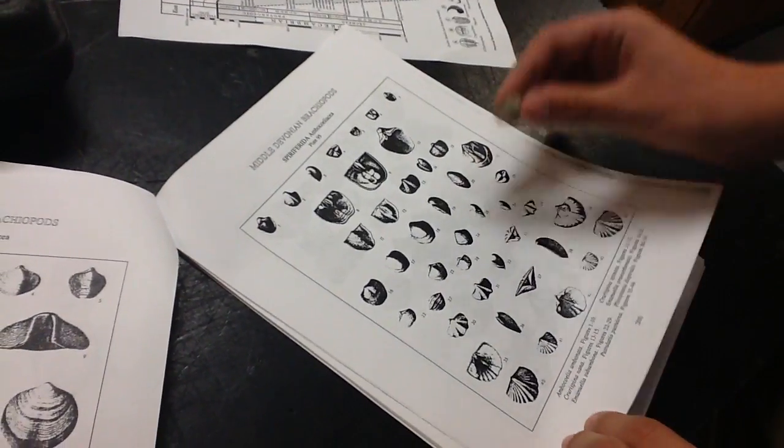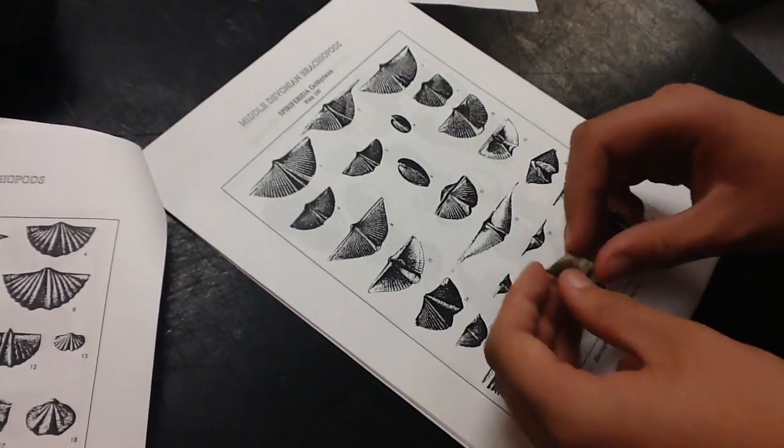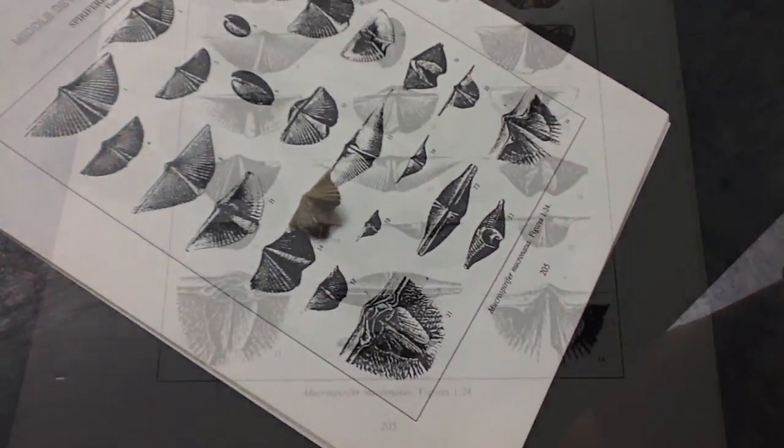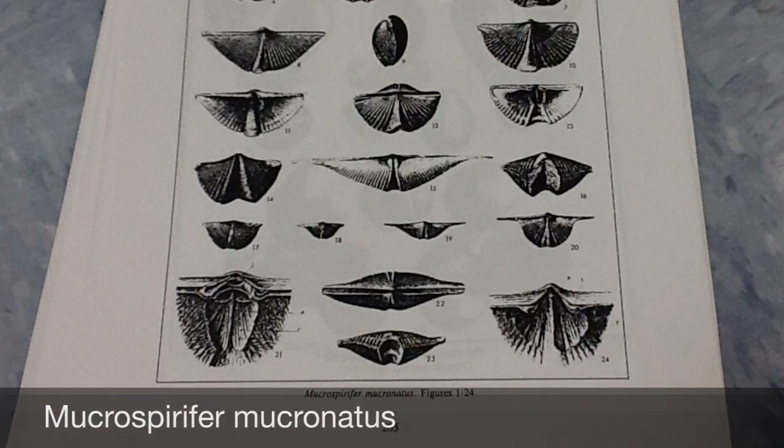Finally, take your third and final fossil and compare it against various other pages until you determine its identity. In this case, we determined it to be Mucrospiropha mucronatis.